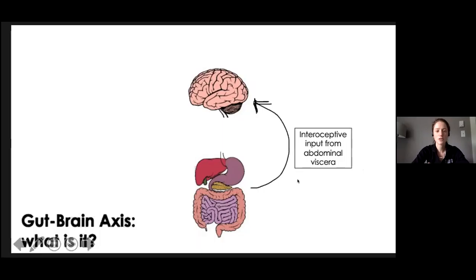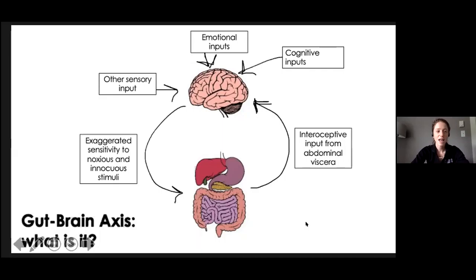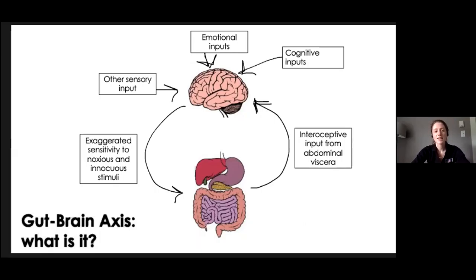There is interoceptive input from the abdominal viscera — something felt by the enteric nervous system, the signal goes to the brain, where it's modified by cognitive, emotional, and other sensory inputs. That signal then goes back to the gut, creating exaggerated sensitivity to noxious and innocuous stimuli, presenting as pain, nausea, bloating, and so on. This whole concept is called visceral hypersensitivity.